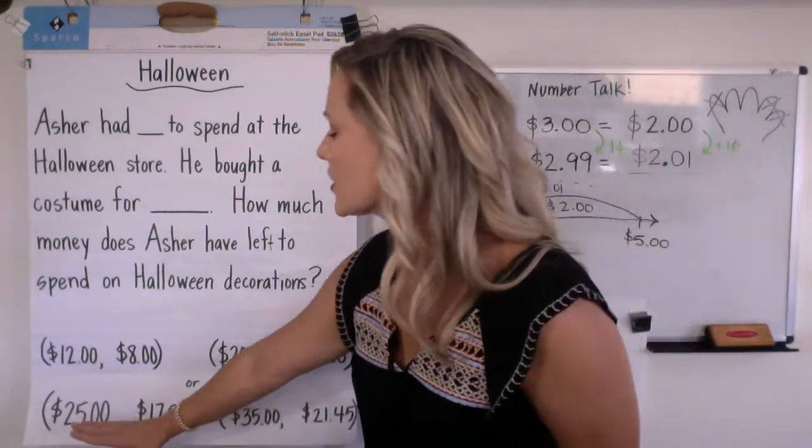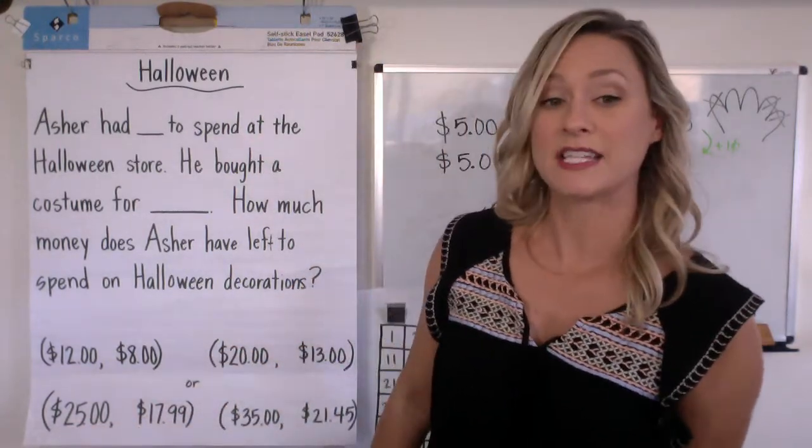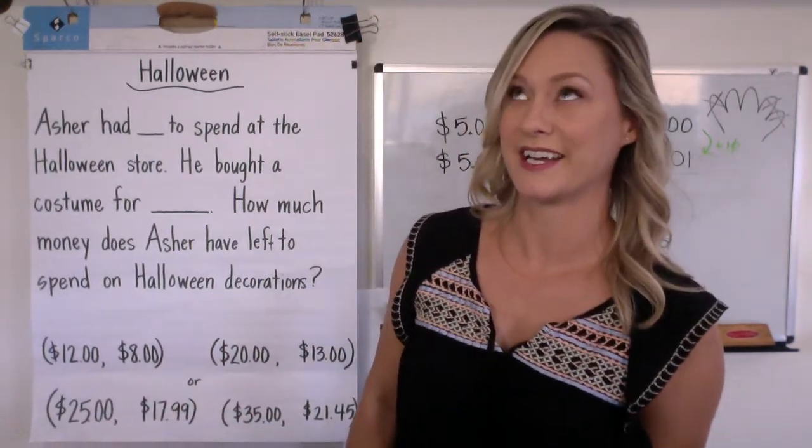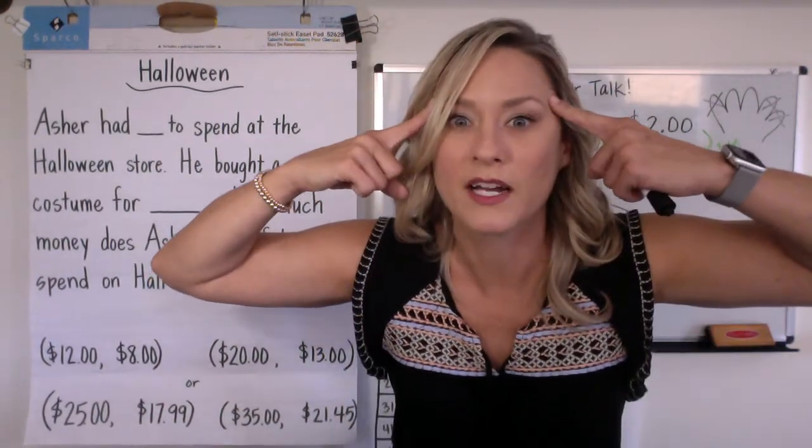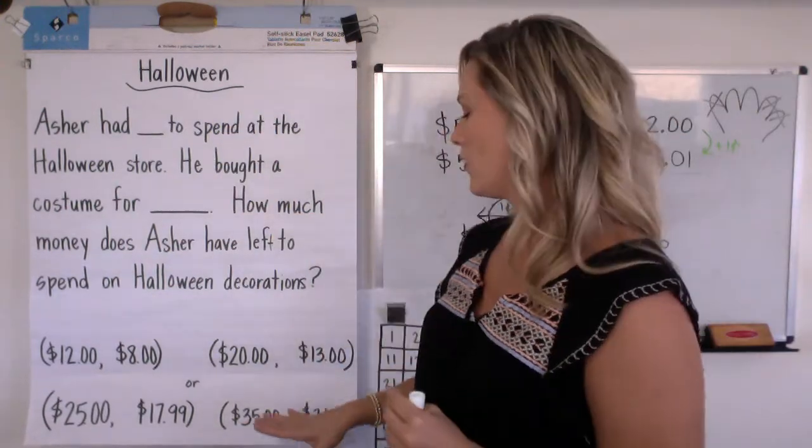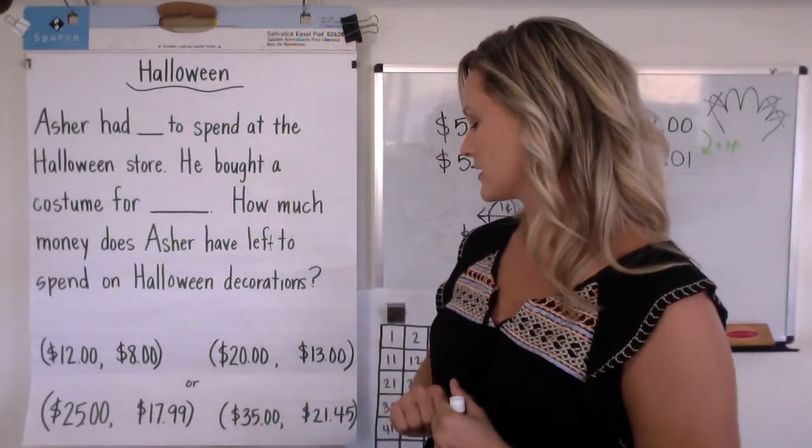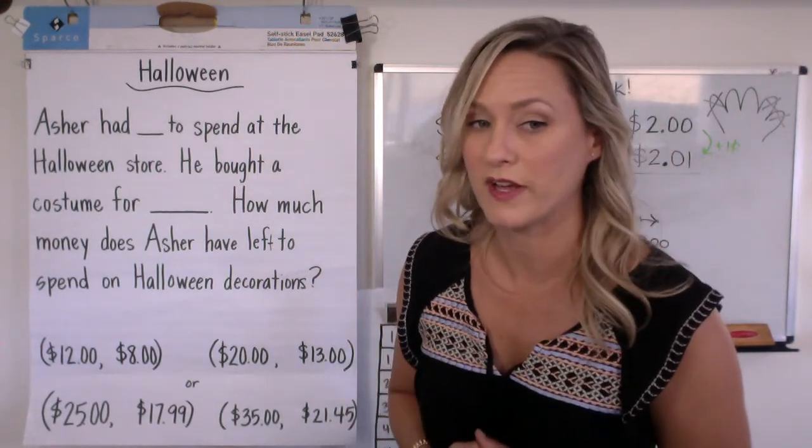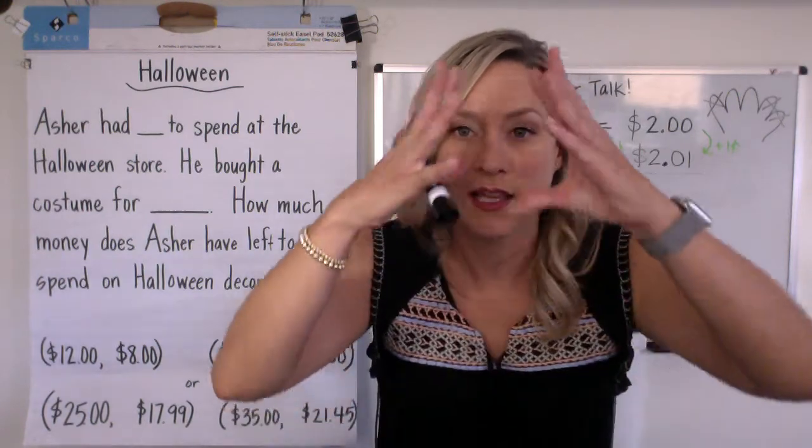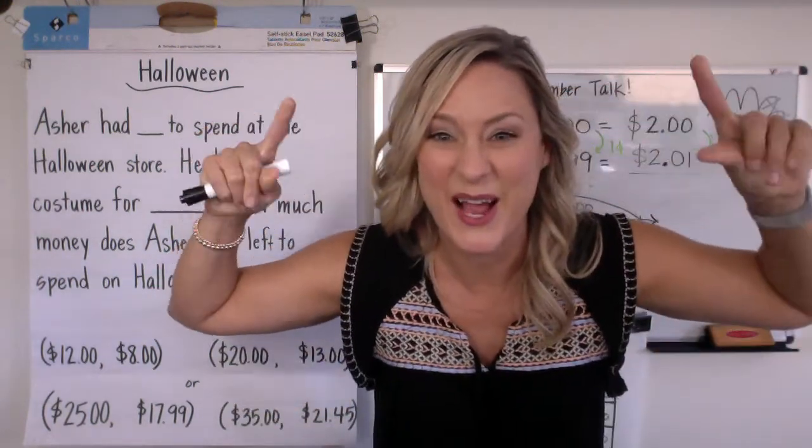Okay, so you might choose twenty-five and eight dollars, or twenty-five and seventeen dollars and ninety-nine cents. Excuse me, oh gotta slow down my brain. Or you might choose thirty-five and twenty-one forty-five. Okay, these are challenging. Let your brain stretch. I hope you find it a little difficult today.